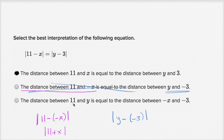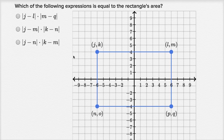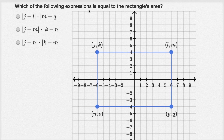The third choice says the distance between 11 and y is equal to the distance between negative x and negative three — they've just completely mixed everything up, so that's not going to be the case. Let's do one more. We are asked which of the following expressions is equal to the rectangle's area. If you want to figure out the area of a rectangle, you multiply the width times the height.